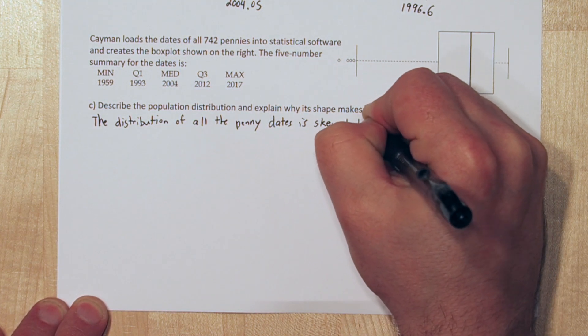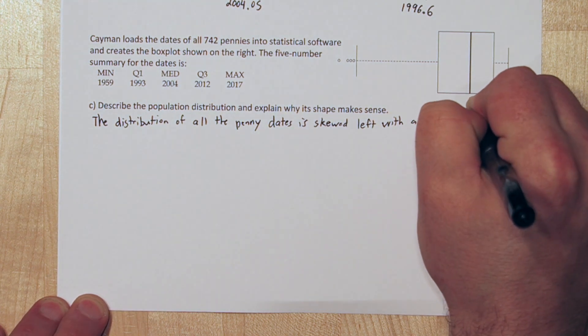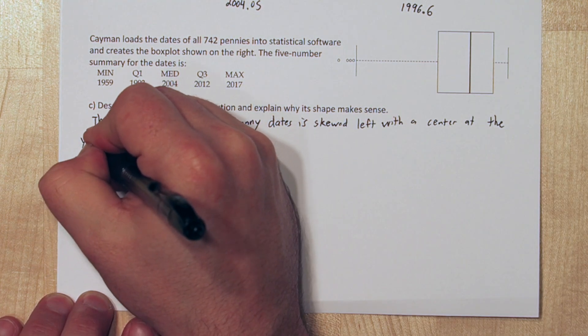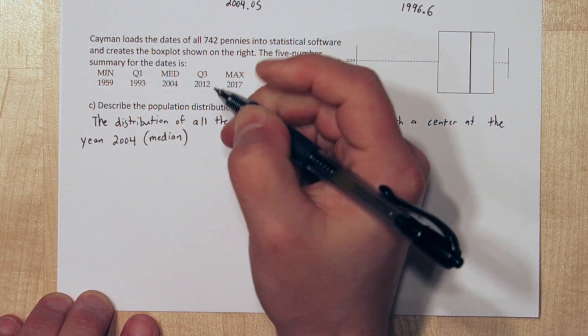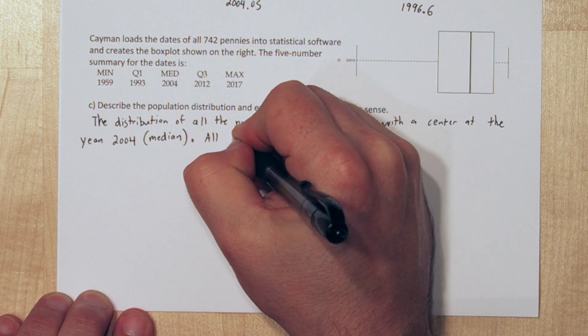The distribution of all penny dates is skewed left with a center at the year 2004, which is the median. We can see this by the long tail on the left side of the box plot.